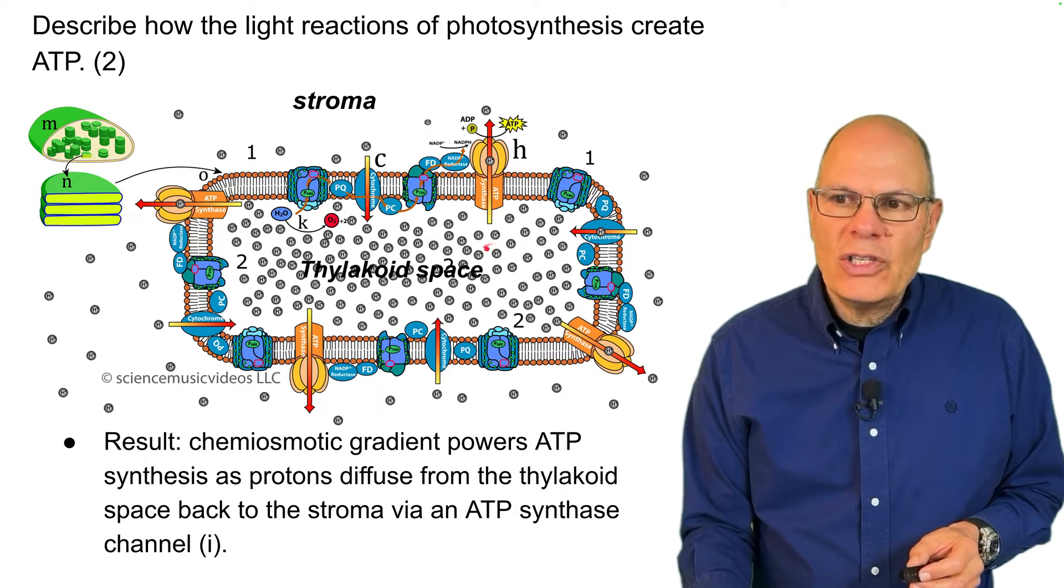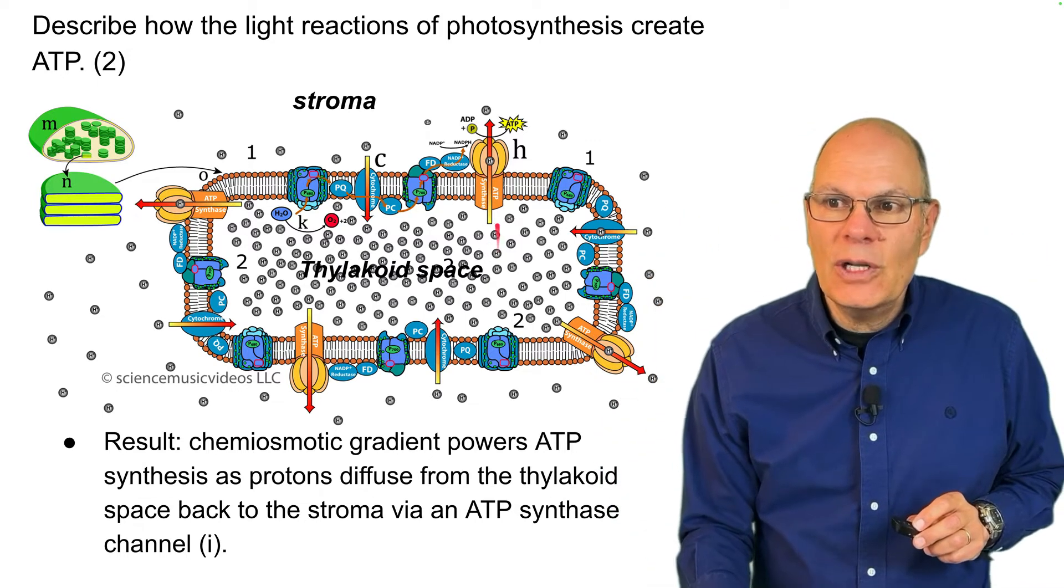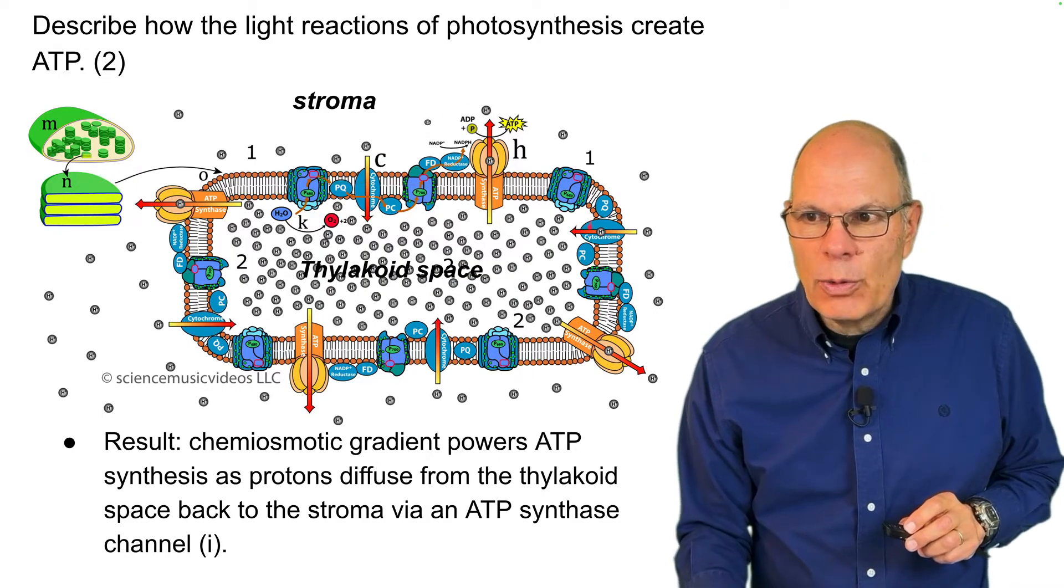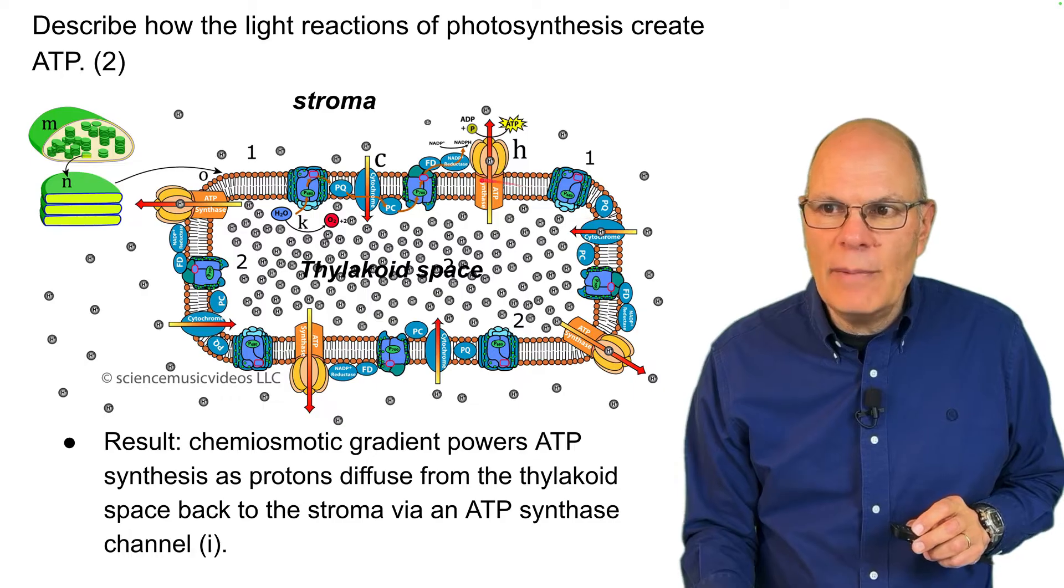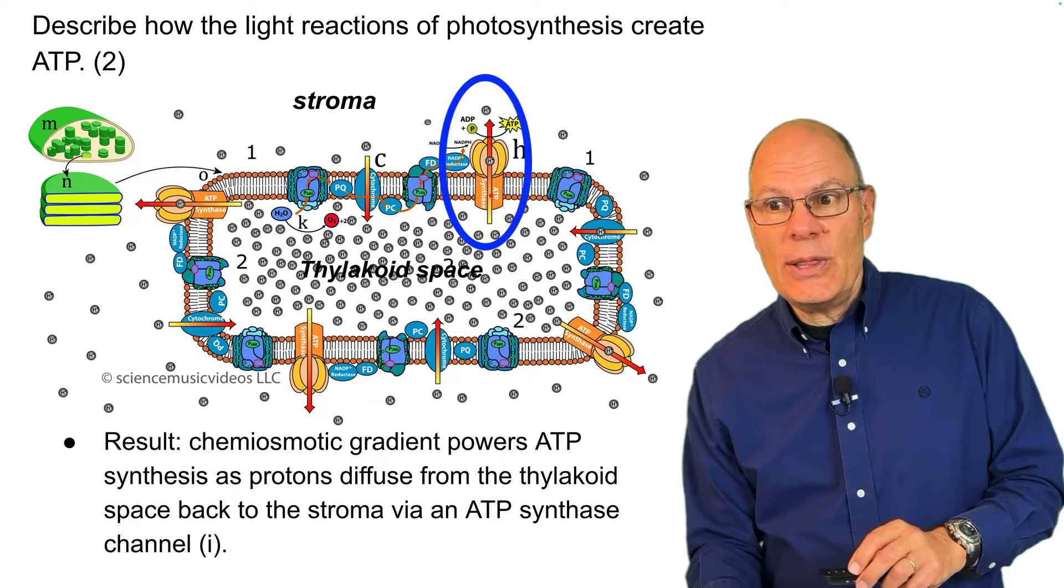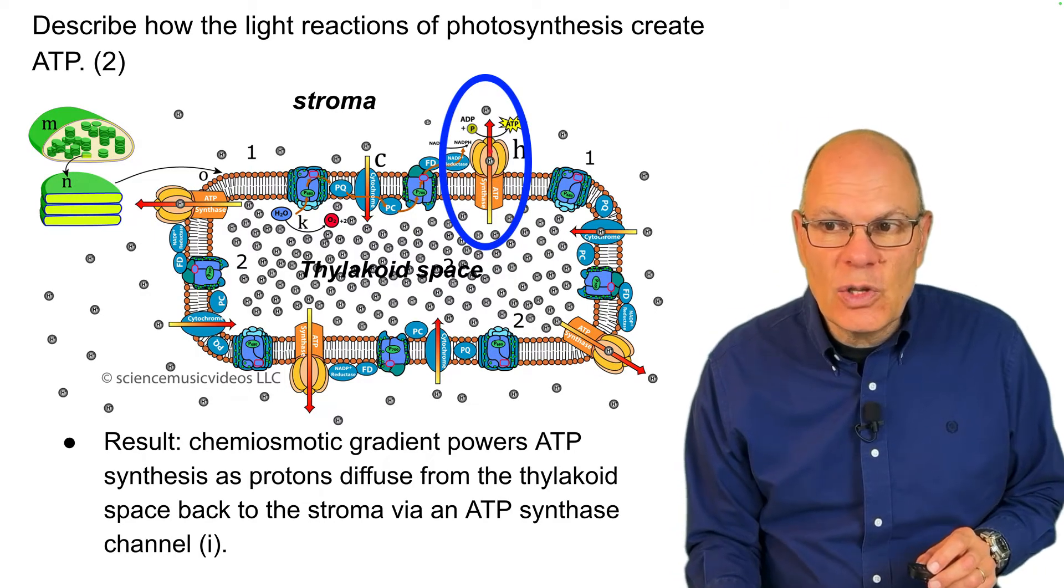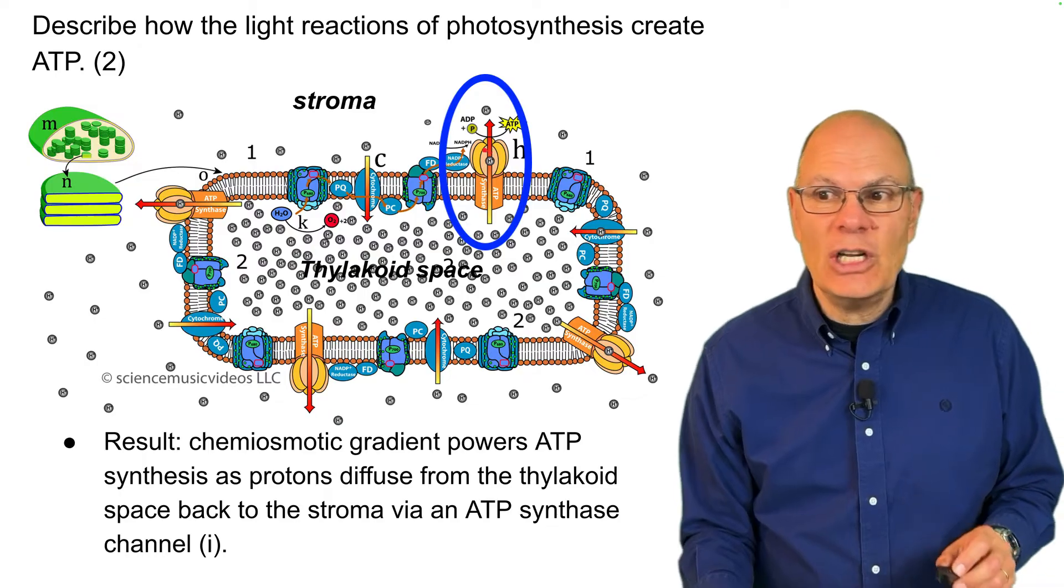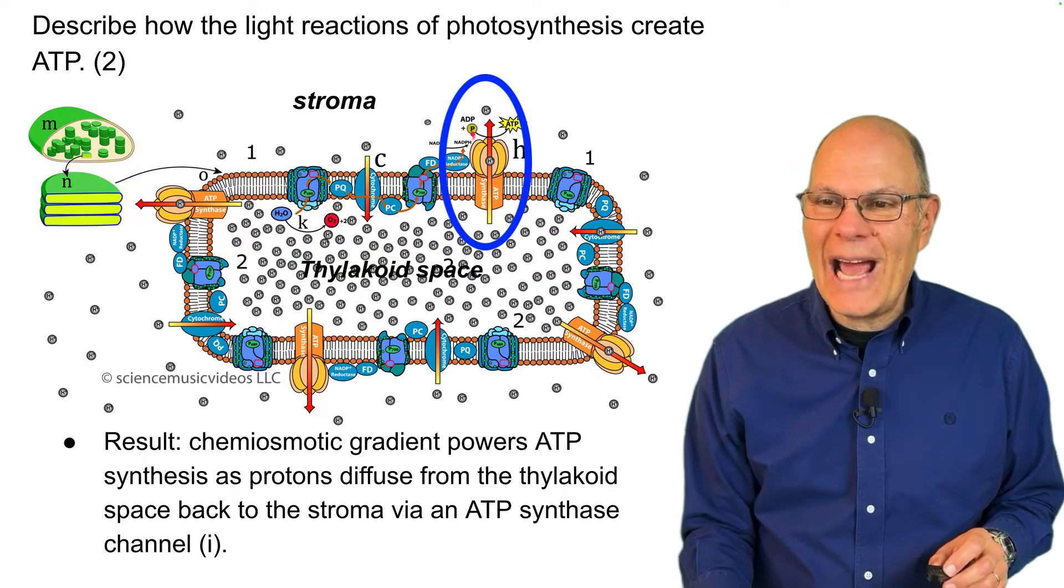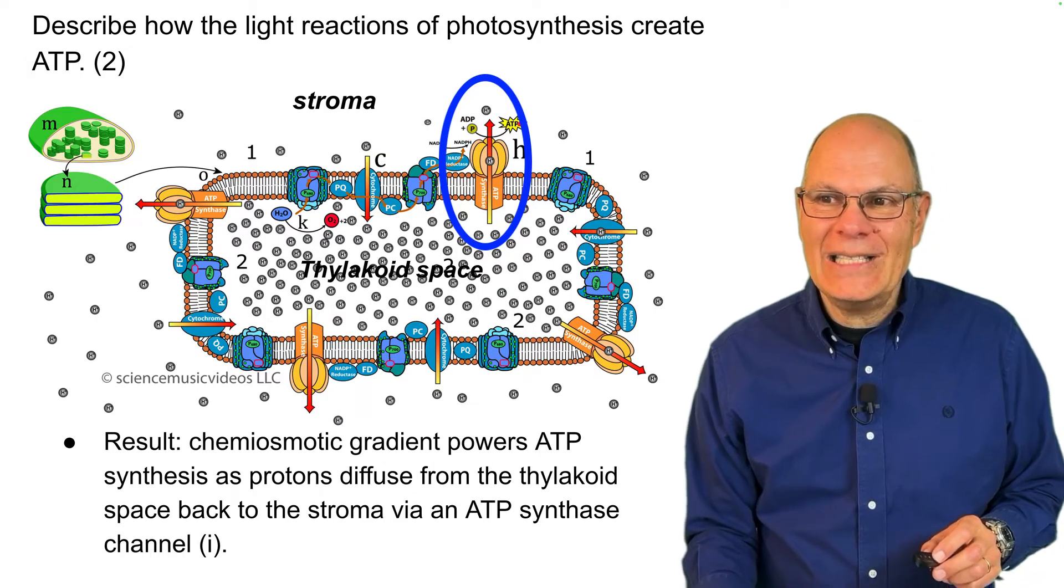That causes these protons to want to diffuse from the thylakoid space back to the stroma. They can't do it through any part of the thylakoid membrane except through this channel that's called ATP synthase. The ATP synthase channel is also an enzyme, and as protons diffuse through, the kinetic energy of those protons is used to power an endergonic reaction of taking ADP and phosphate and making it into ATP.